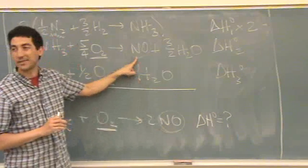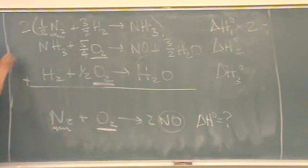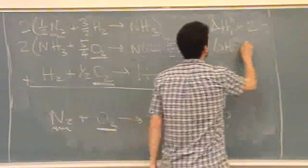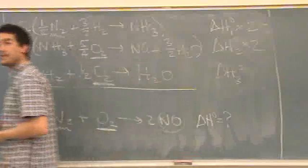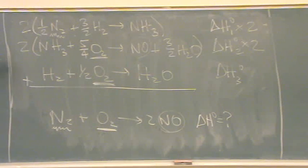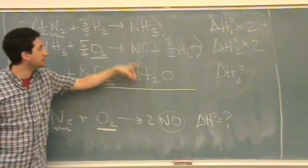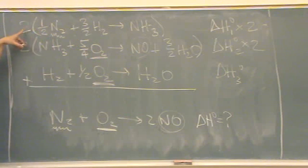So I'm going to go straight to the NO. It's twice here, once here. I'll multiply this by 2. Does that make sense? Now I've got two NOs where they're supposed to be in the products. I've got an N2, one of them, and it's in the reactants. Check, check.